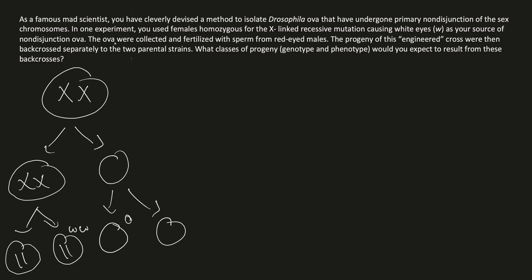The ova were collected and fertilized with sperm from red-eyed males. If it's a red-eyed male, the genotype of that male is W+ and Y — where W+ is on the X chromosome. If they went through normal disjunction, the male sperm would end up either having the W+ allele on the X chromosome, or having the Y chromosome.